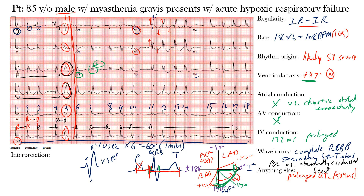For our final interpretation: we have an irregularly irregular rhythm at a rate of 105 beats per minute. We cannot make out any clear atrial or atrioventricular activity. All of this suggests atrial fibrillation with rapid ventricular response (RVR). IV conduction is prolonged due to complete right bundle branch block, which caused the secondary ST-T abnormalities. We also noted the PVC or aberrantly conducted complex, as well as the prolonged QTc interval. Compared to a previous EKG, the only difference was an increase in ventricular rate by 43 beats per minute.